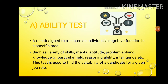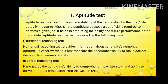The aptitude test measures the set of skills required to perform a given job. It is measured in 12 ways: numerical reasoning test, verbal reasoning test, inductive reasoning test, mechanical reasoning test, diagrammatic reasoning test, spatial reasoning test, situational judgment test, mental arithmetic test, vocabulary test, and number sequence test.